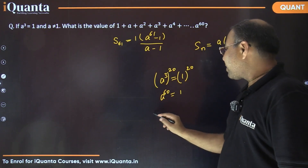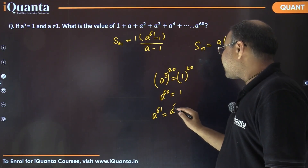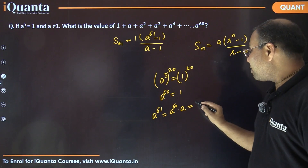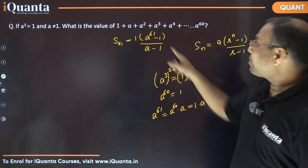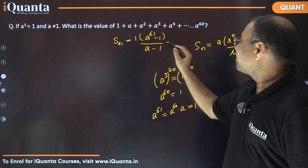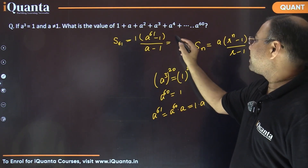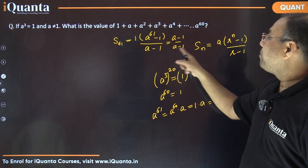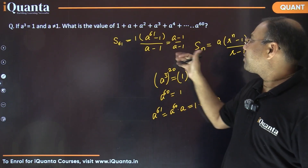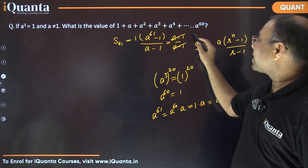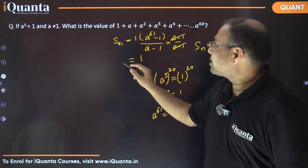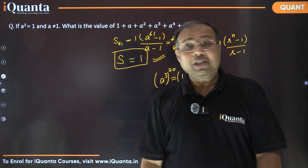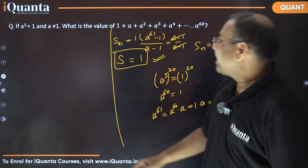So a⁶¹ − 1 actually becomes a − 1, divided by a − 1. Because a ≠ 1, we know a − 1 ≠ 0, so we can cancel them directly. The answer comes out to be 1. So this required sum S = 1. Isn't that simple? That was one of the ways.